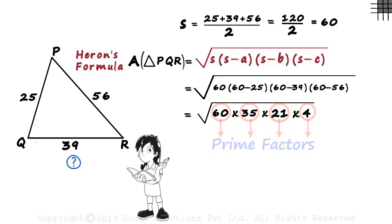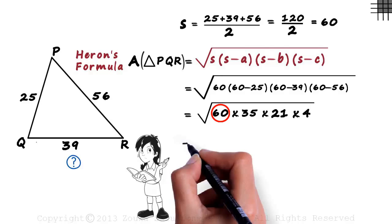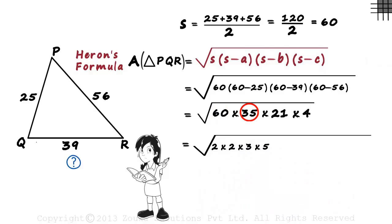Let's look at the number 60 to start off. 60 can be written as 2 times 2 times 3 times 5. 35 can be written as 5 multiplied by 7. 21 can be written as 3 multiplied by 7. And 4 can be written as 2 times 2.